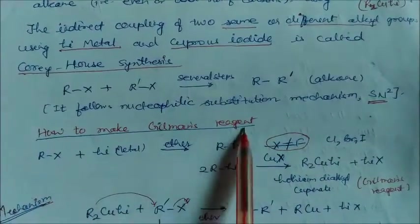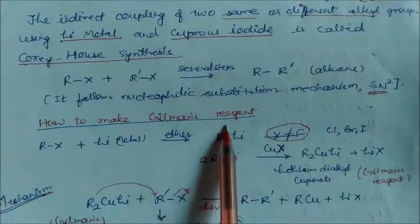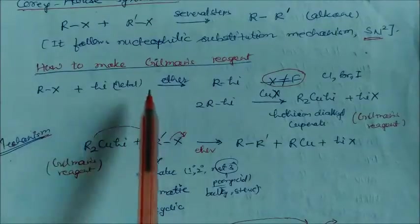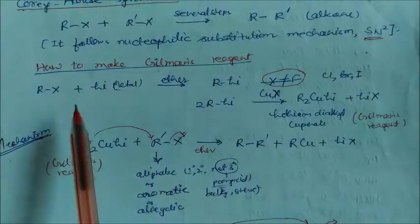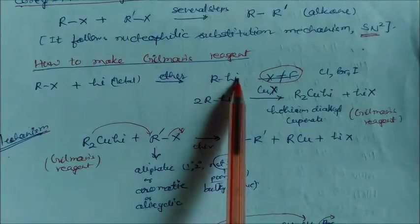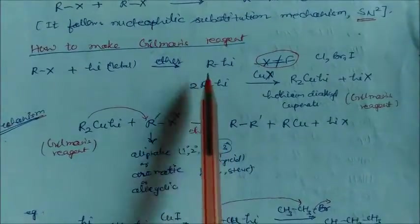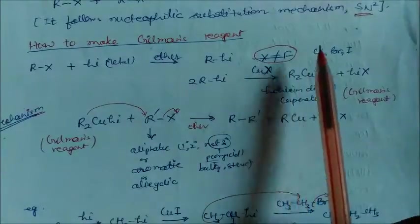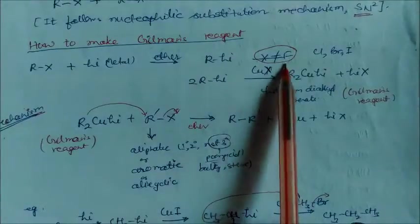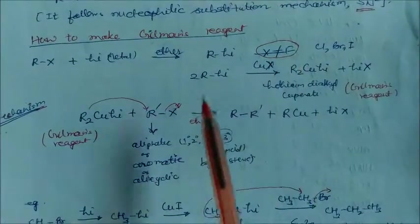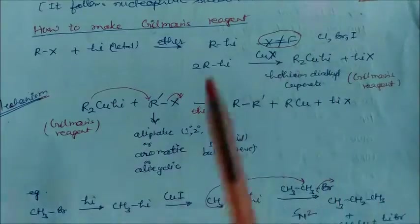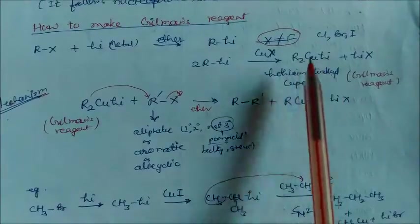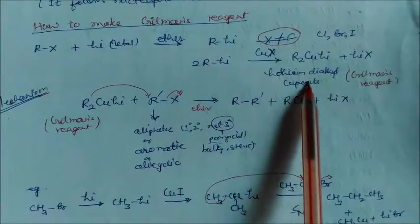Now let us see how the mechanism works and how to make Gilman's reagent, which is very important in Corey-House synthesis. First, an alkyl halide reacts with lithium metal in the presence of ether to give R-Li. Then, two moles of R-Li react with CuX — where X should not be fluorine (it can be chlorine, bromine, or iodine; fluorine causes a violent reaction) — to give R₂CuLi, the lithium dialkyl cuprate, plus lithium halide.